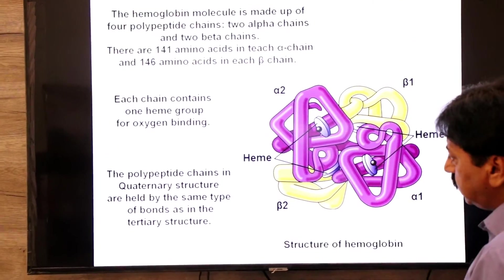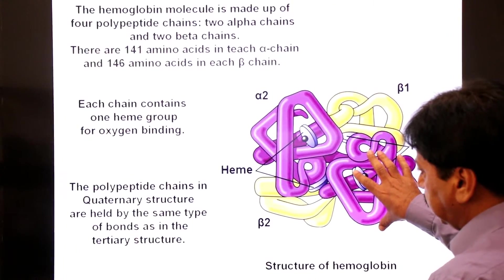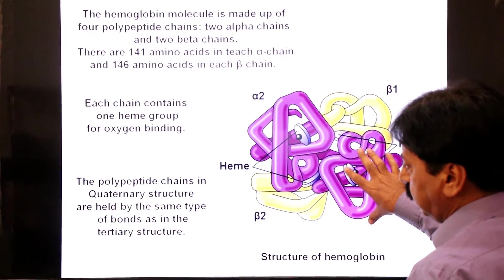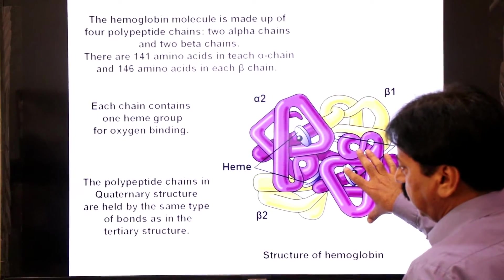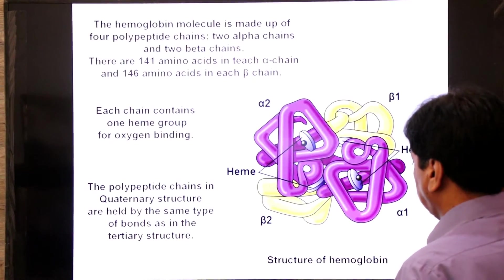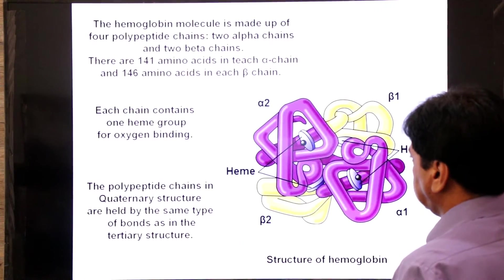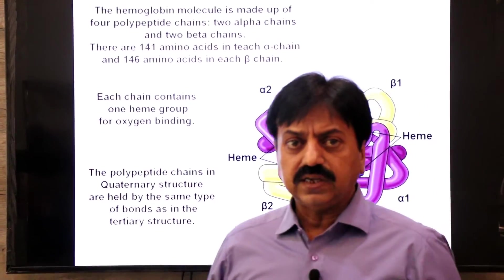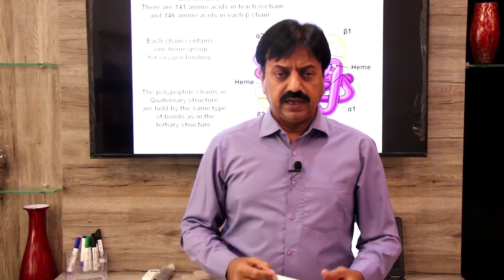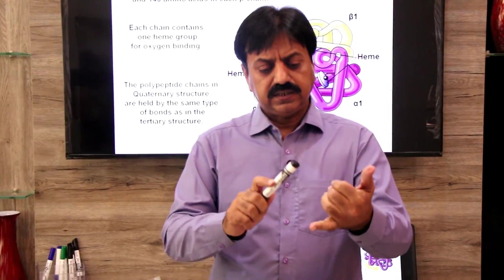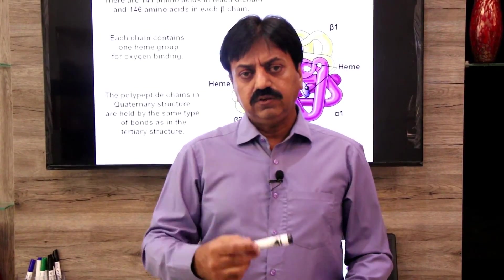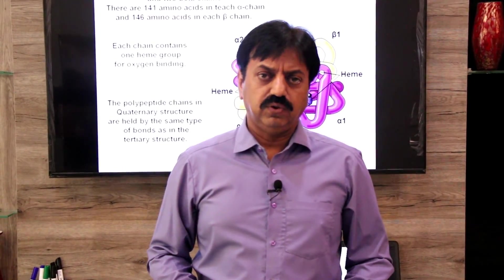Dear students, the bonds holding tertiary structure are hydrogen bonds, ionic bonds, and disulfide bonds. This is the structure of hemoglobin showing the quaternary structure of protein. So dear students, we have 4 levels of protein: primary structure, secondary structure, tertiary structure, and quaternary structure. Thank you dear students, wishing you all the best.